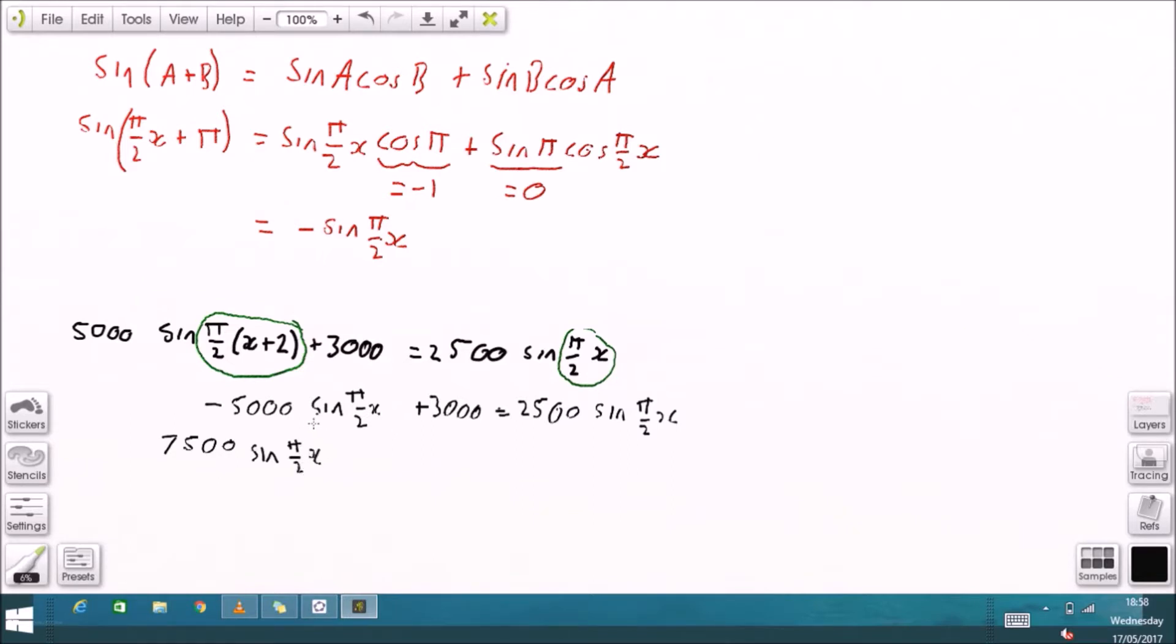So if I combine the two sine terms because they have the same angle, then that will leave me with this equation. And I'll rearrange this until I get to the point where I've got the angle separated.